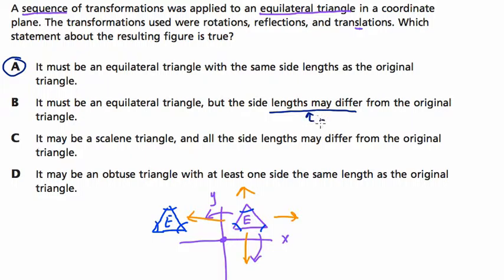A, it must be an equilateral triangle, so far that's so true, with the same side lengths as the original triangle. Well, yes, that's true. We're not changing the side lengths, right? I think that's the answer, but let's keep going.